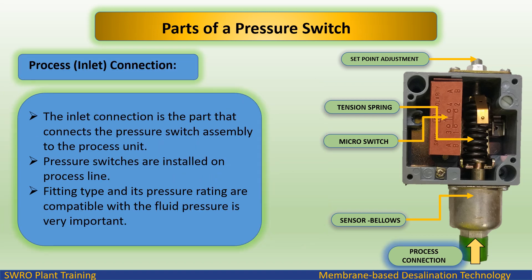Parts of a pressure switch. The process inlet connection is the part that connects the pressure switch assembly to the process unit. Pressure switches are installed on a process line. The fitting type and its pressure rating must be compatible with the fluid pressure.